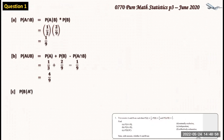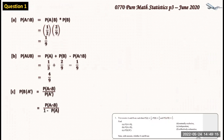For part (c), the probability of B given A prime equals P(A∩B) divided by P(A prime). We know that P(A prime) = 1 − P(A), since A prime means the complement of A. Substituting: we have one over nine divided by one minus one third, because P(A) is one third. This gives us one over six.